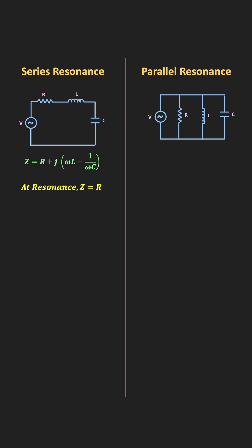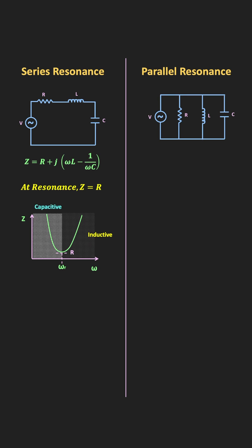For this series RLC circuit, if we see the impedance versus frequency curve, then it will look like this. At resonance, the circuit will be purely resistive. The frequency at which this resonance occurs is known as the resonant frequency. If we go beyond this resonant frequency, the series RLC circuit will be inductive in nature. Below this resonant frequency, the circuit will be capacitive.